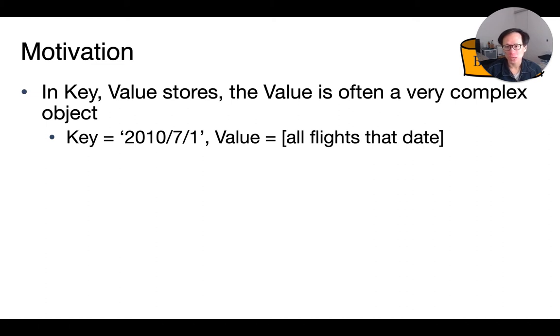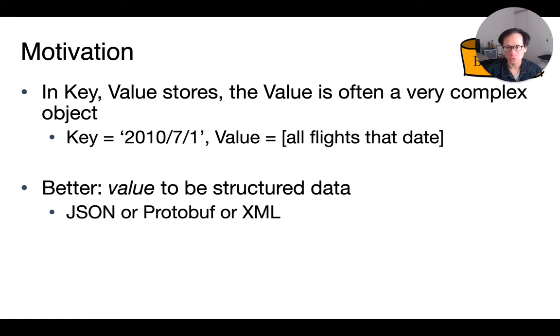So how about we impose some structure on the data associated with each key? For instance, the associated data must be a JSON or an XML document. And to distinguish this from just arbitrary data, we use the term document to refer to the data that is stored with each key.